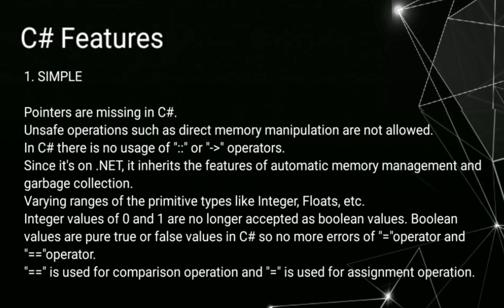1. Simple. Pointers are missing in C sharp. Unsafe operations such as direct memory manipulation are not allowed. In C sharp there is no usage of arrow or greater than operators. Since it's on dot NET, it inherits the features of automatic memory management and garbage collection.